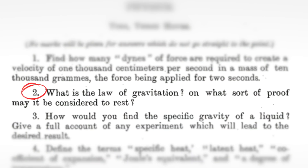What is the law of gravitation? On what sort of proof may it be considered to rest? That's a strange wording. I love this question because in 1888, the concept of gravitation was entirely Newtonian — this was before Einstein came along in 1905 and 1915. Gravitation would have been 1915, the general theory rather than the special one. The answer we'd give now would lie entirely in curvature of space-time and geodesics and all these kinds of things.